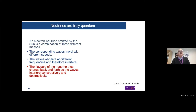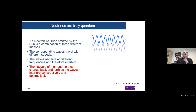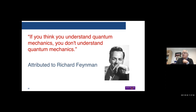So neutrinos are truly quantum particles. How does this flavor oscillation happen? An electron neutrino emitted by the sun is a combination of three different mass states. The corresponding waves travel at different speeds because of their different masses, oscillate at different frequencies, and therefore interfere. We observe this through the fluctuations of the flavors, which change back and forth as the waves interfere constructively and destructively on their way to the Earth. This is a truly quantum mechanical phenomenon.